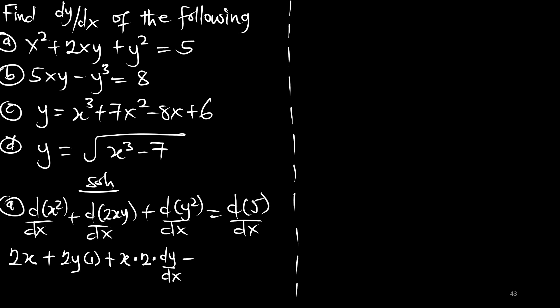The third part — the derivative of y squared — gives us 2y, and since we are differentiating y, we still have dy/dx. The derivative of the constant is zero. Rearranging, we have 2x plus 2y plus 2x dy/dx plus 2y dy/dx equals zero.